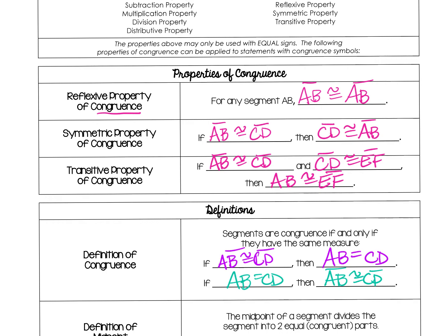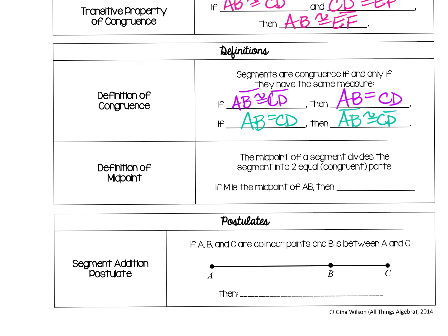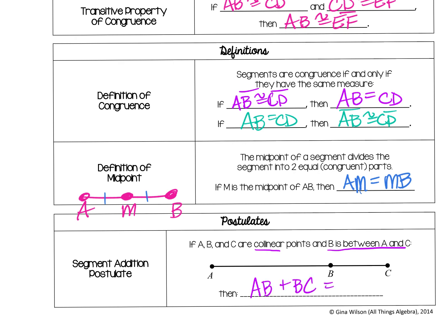The definition of a midpoint still works exactly the same as it did the first week of school. The midpoint of a segment divides the segment into two equal or congruent parts. So if M is the midpoint of AB, then AM is congruent to MB — AM is equal to MB. Just like before with segment addition: if the points are collinear and B is between two points, then AB plus BC is equal to AC. Part plus part equals whole.